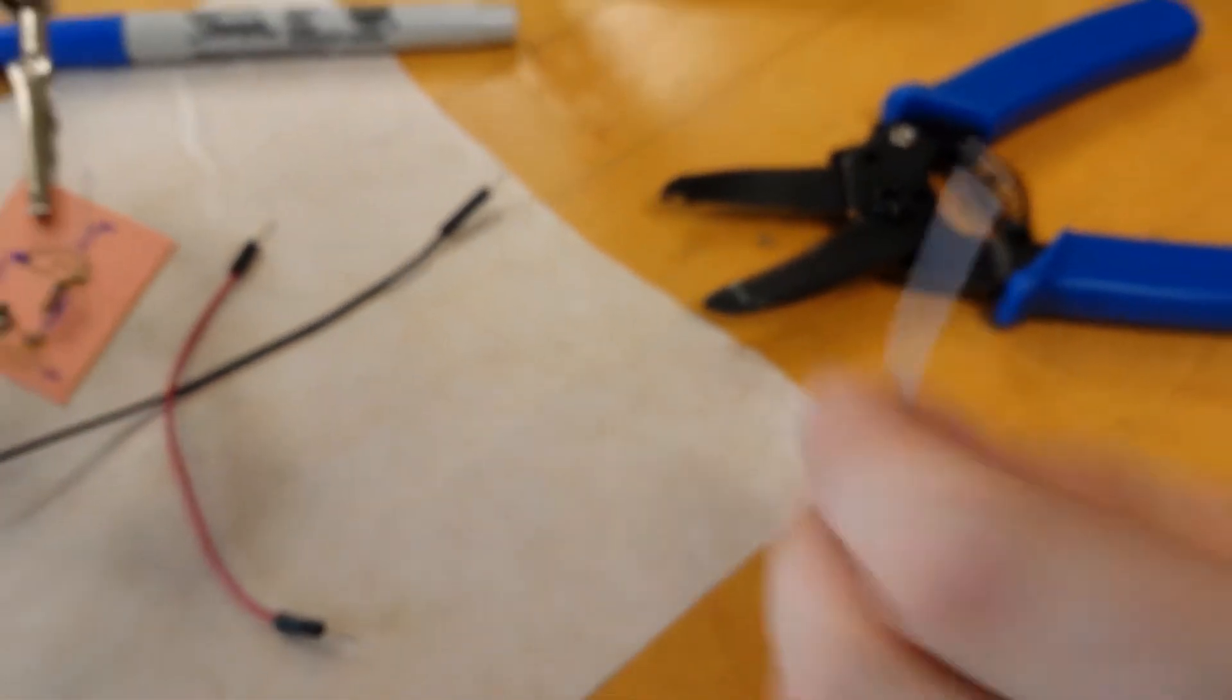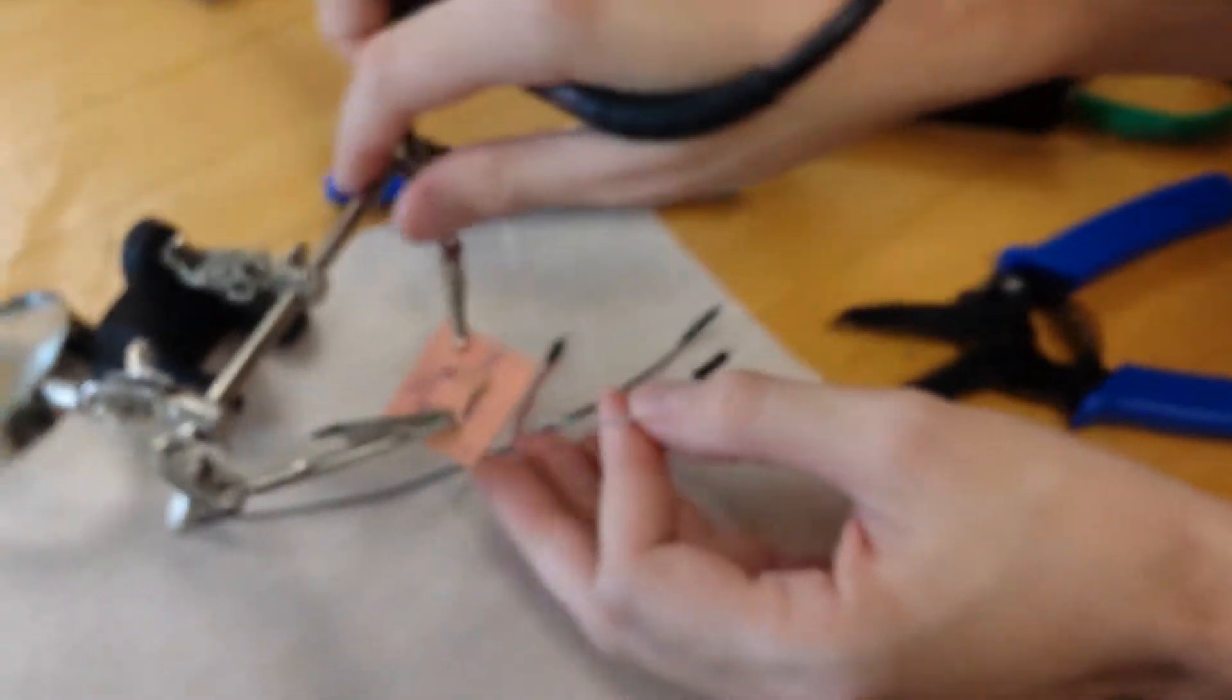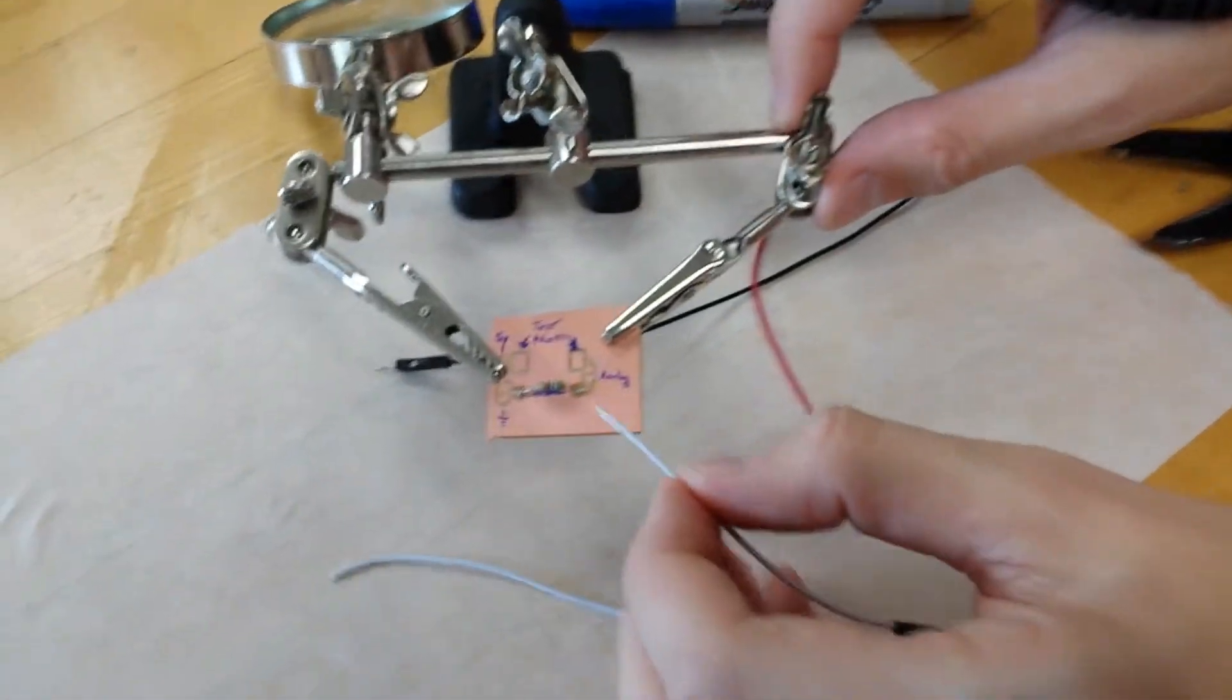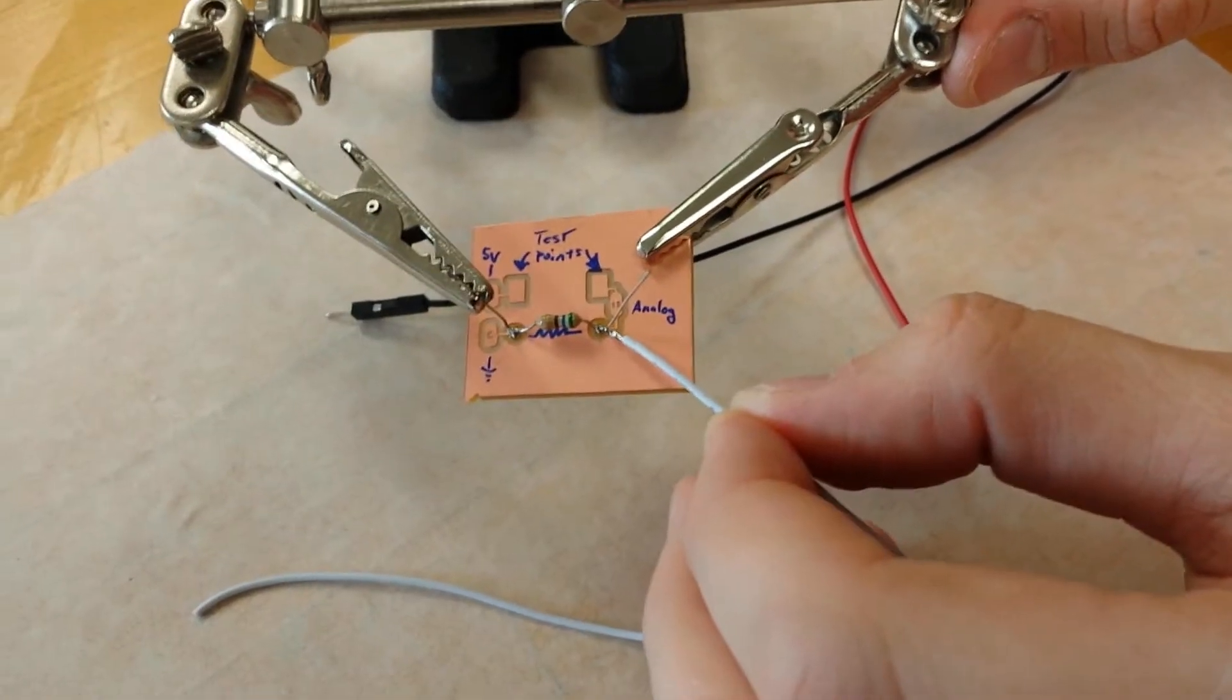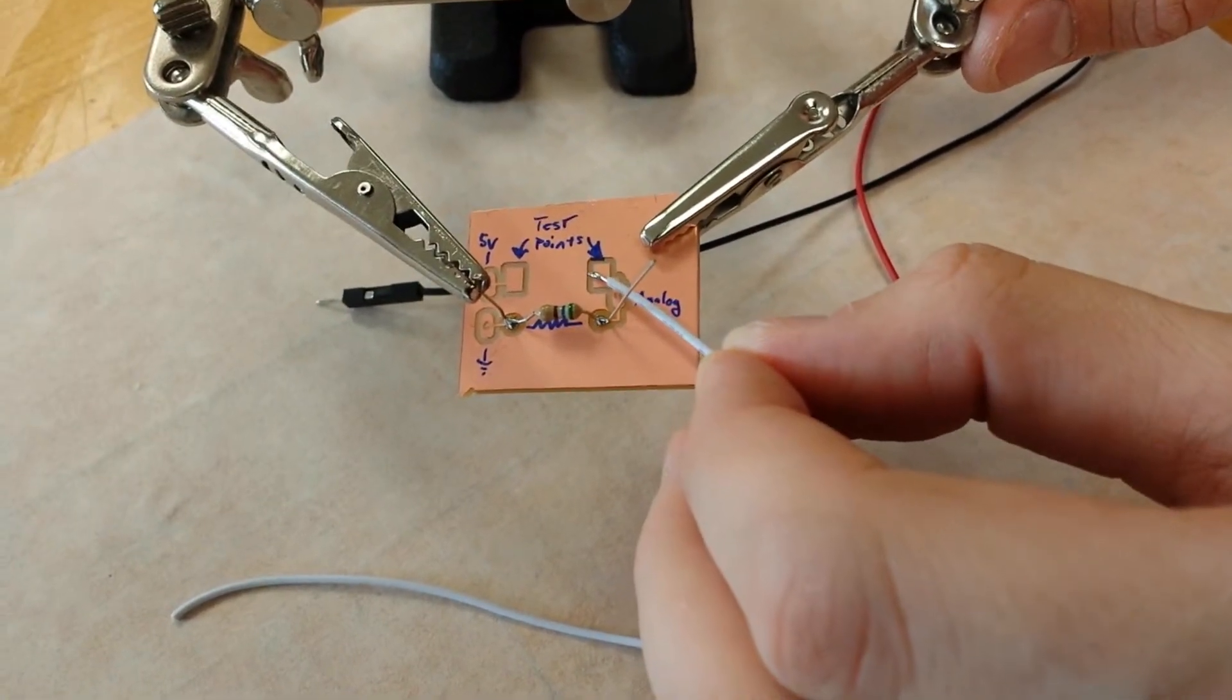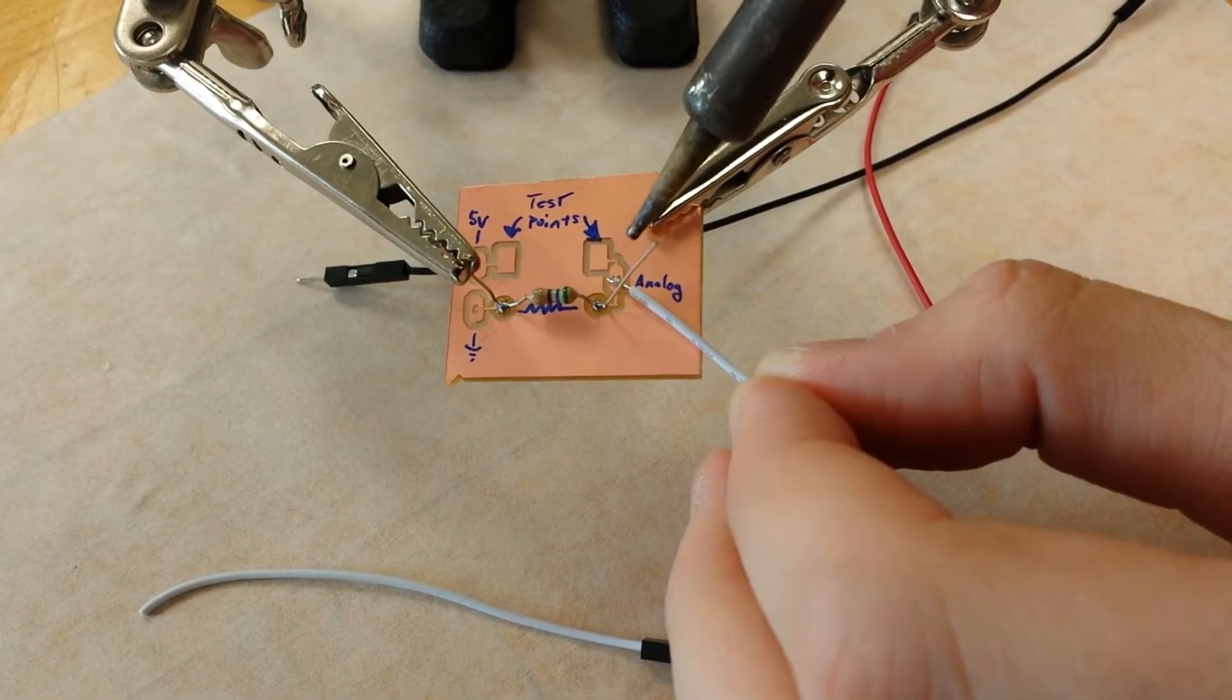So now there's a tiny ball of solder on the wire. And this wire, the white one, I'm going to use as my analog output. So I can solder it to any place right here that's connected between this resistor and the test pad. I'm going to choose to put it right in the middle here.